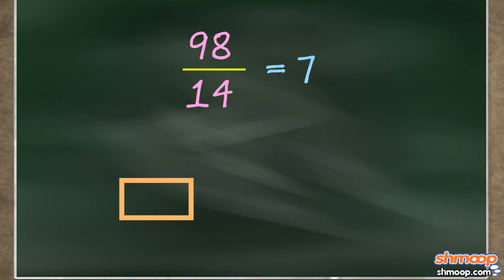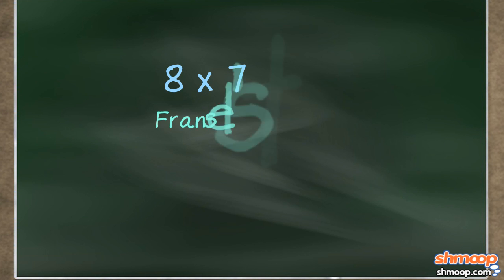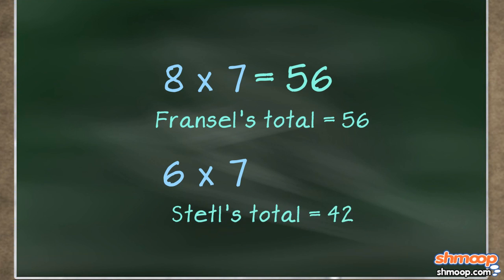So we know each rectangle represents 7 zits. We can multiply by 8 to get Francil's total of 56, and by 6 to get Shtetl's total of 42.